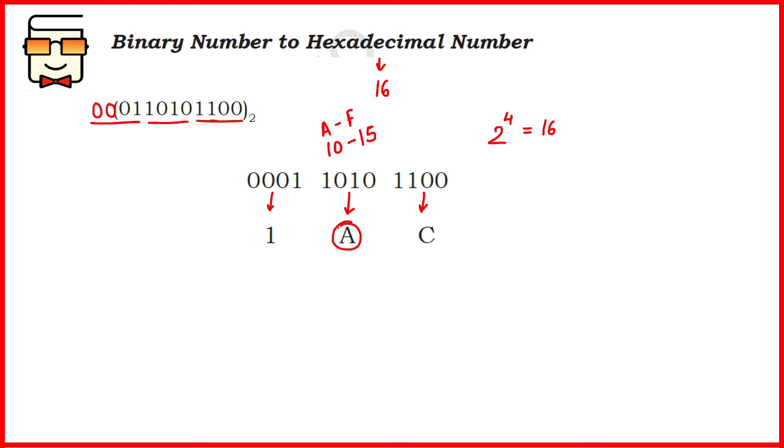Here you have written A for 10 and here you have written C corresponding to 12, because this value is 2 raised to the power 3 and 2 raised to the power 2, which will give you 8 plus 4, which is 12, corresponding to the letter capital C in hexadecimal. So what is the final answer? 1AC in hexadecimal, that is base 16.